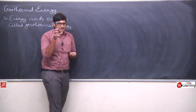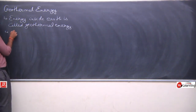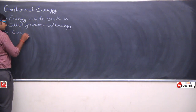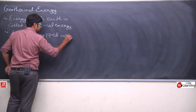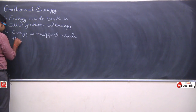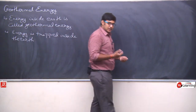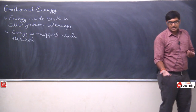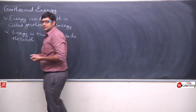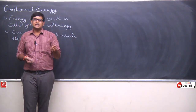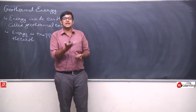So this heat that is trapped inside the earth — we call this the earth's energy. This energy is trapped inside the earth and is sufficient to melt rocks — it can melt stones, that's how much energy there is.